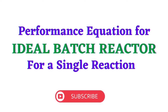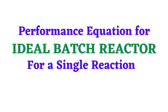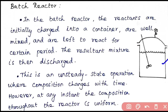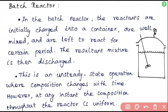First, let's see what a batch reactor is and how it works. A batch reactor consists of a vertical cylinder equipped with an agitator for mixing the contents to maintain a uniform composition throughout the reactor. It is also provided with an external jacket or cooling coil to maintain the temperature of the contents.